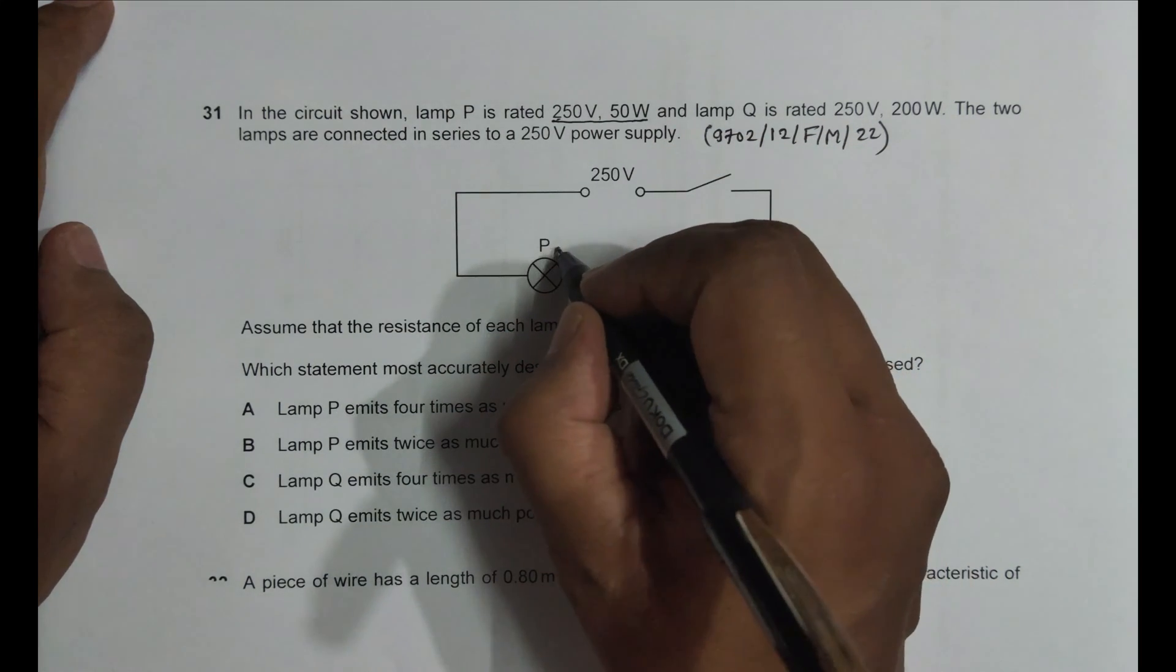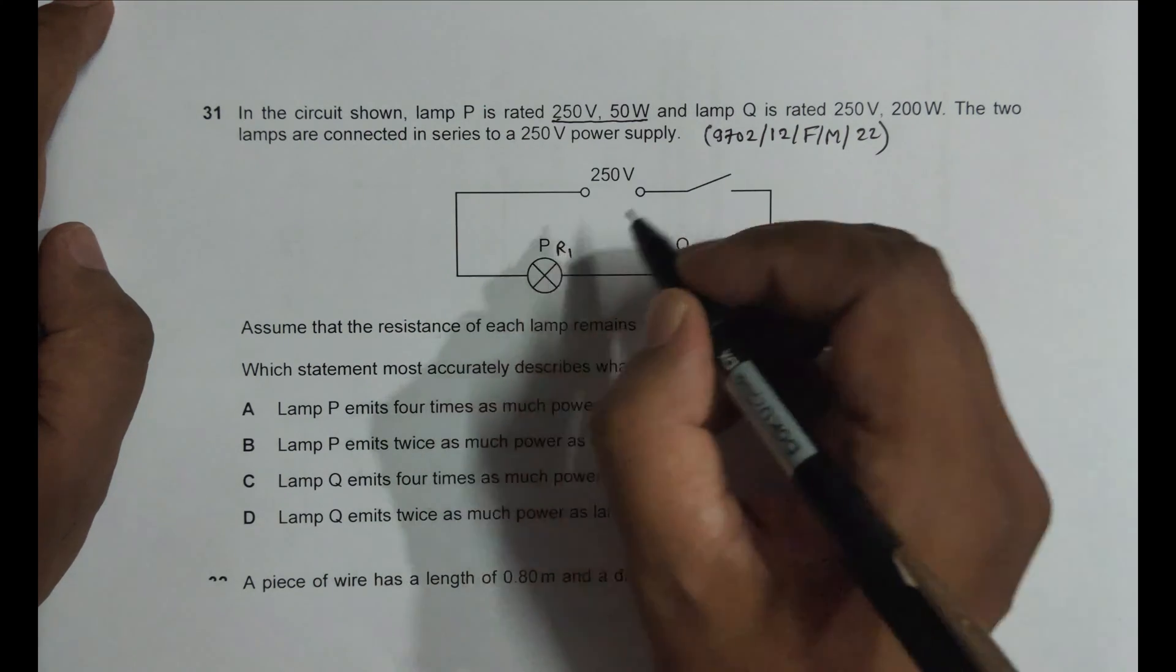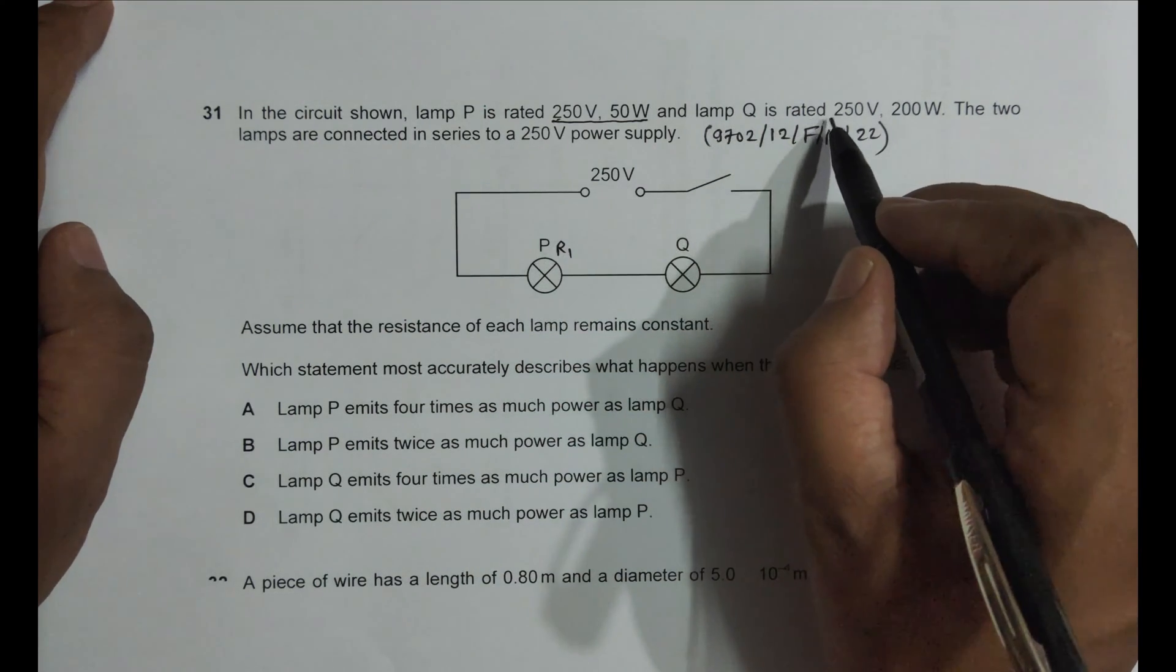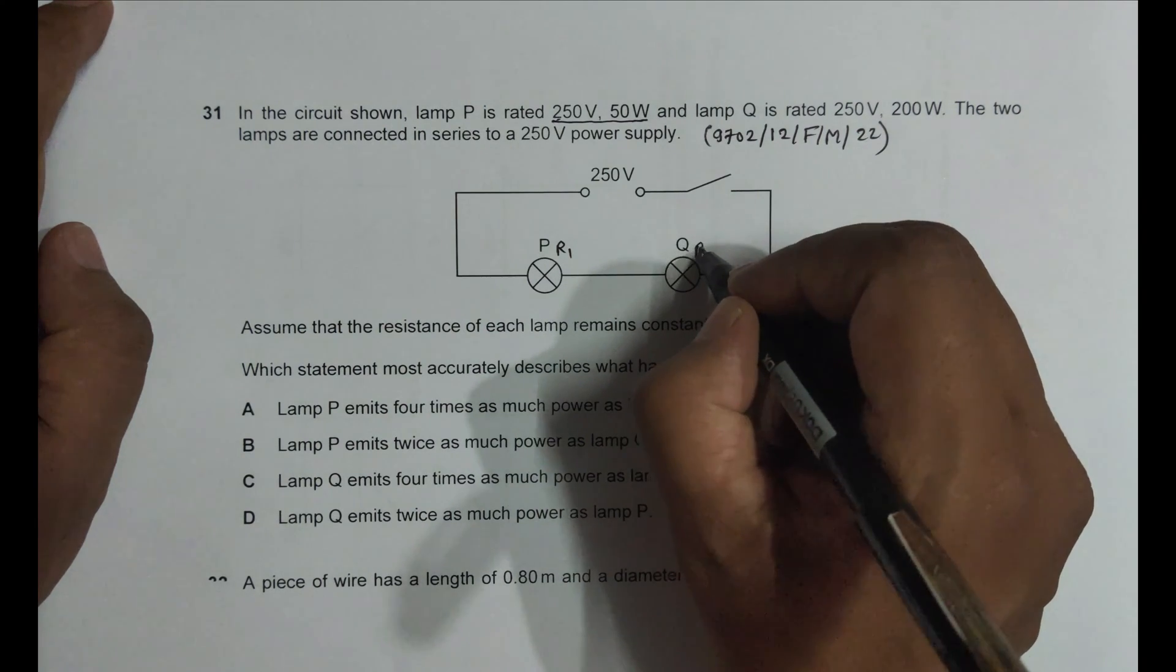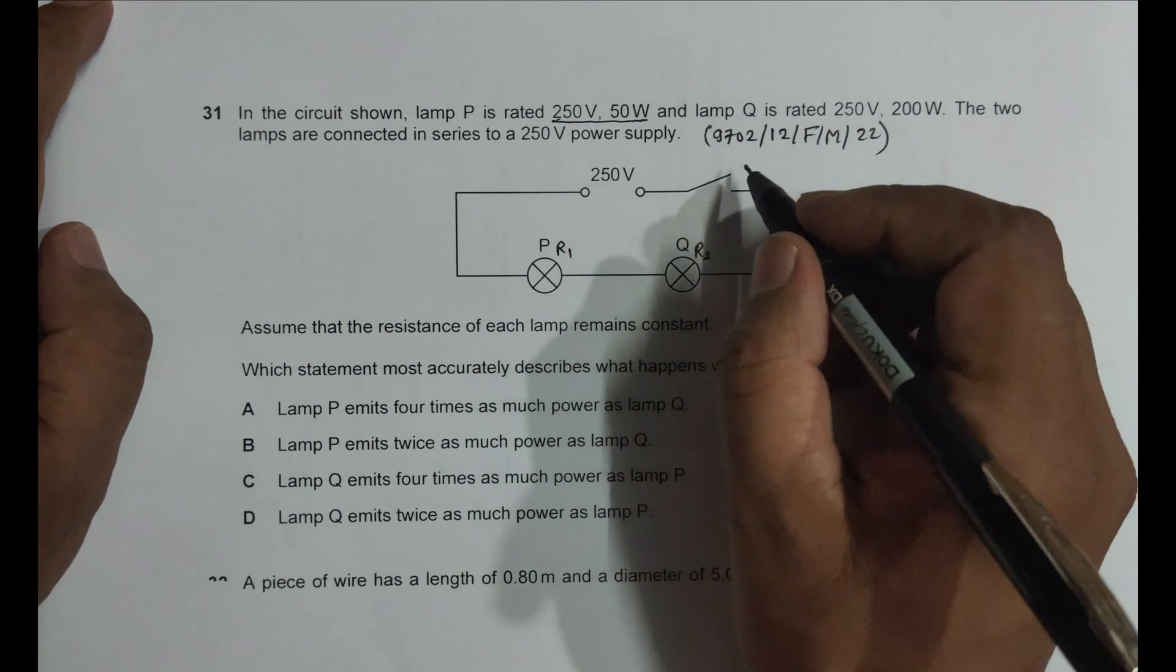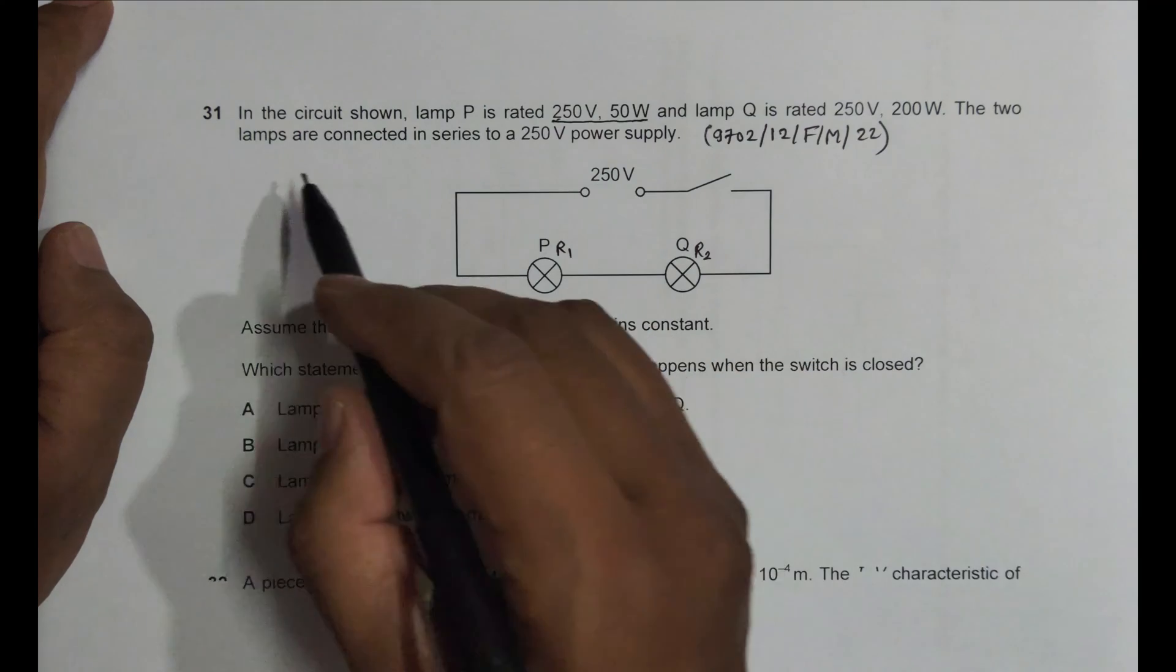So from this rating we have to find the resistance here, which we'll name as R1. And lamp Q is rated at 250 volt, 200 watt, so we name its resistance as R2, which we will be finding shortly.